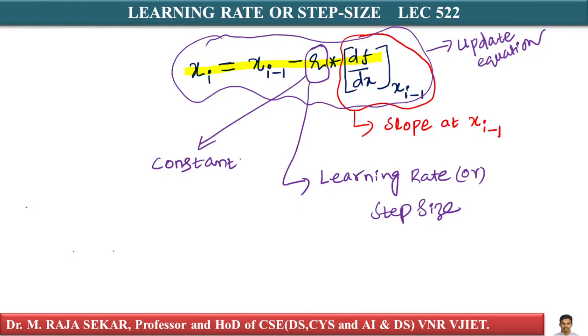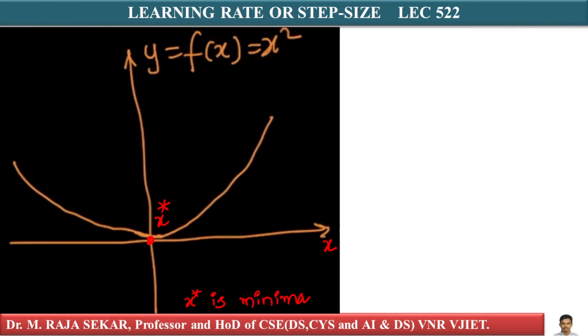Let's take an example of a parabola. Suppose this is y = f(x) = x². I have x as well as y = f(x) = x². Let's assume I reach a point where my xi = 0.5 after some iterations.